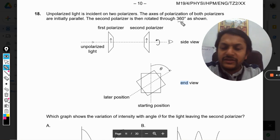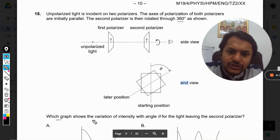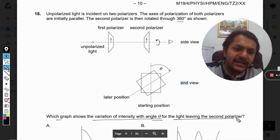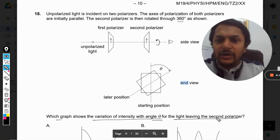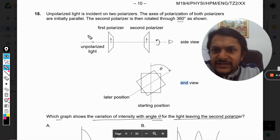The angle theta is rotated by 360 degrees. Which graph shows the variation of intensity with angle theta for the light leaving the second polarizer? This question is about Malus's Law.